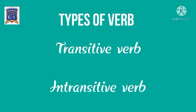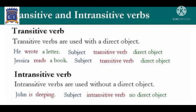Aba in ke baare mei one by one patate hai. First is transitive verb. Transitive verbs are used with a direct object. Jho transitive verb hote hai, woh direct object ke saath use hote hai. Matlab, iska formula hota hai: subject, transitive verb, aur direct object. Example: he wrote a letter. Jessica reads a book.